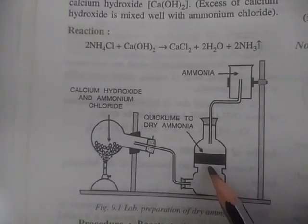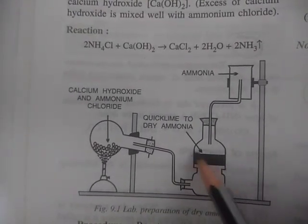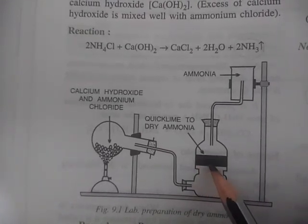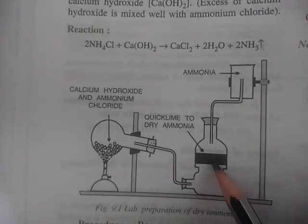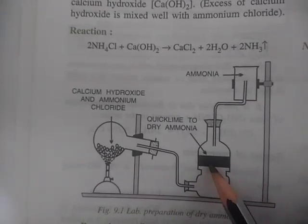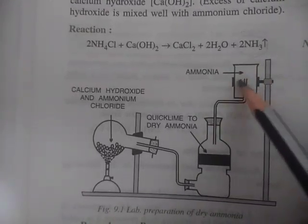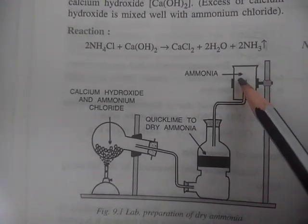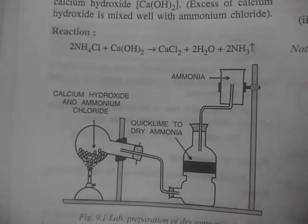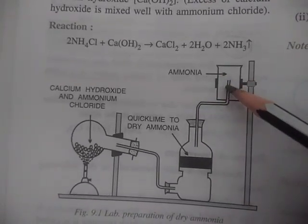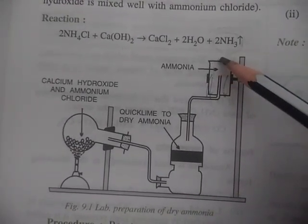In the last chapter on HCl, we used H2SO4 as a drying agent, but here we are using calcium oxide, also called quicklime. Ammonia gas will pass through it, and any moisture will be absorbed by the calcium oxide. Then we collect the ammonia by downward displacement of air. HCl was heavier than air, but ammonia is lighter than air, so the air comes down and ammonia fills from top to bottom.